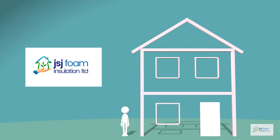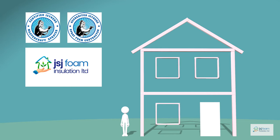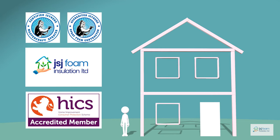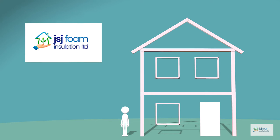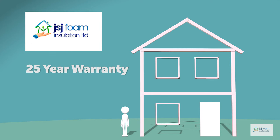JSJ Foam Insulation are an approved Isene installer and an accredited member of HIES Consumer Protection for the home improvement industry. We offer a 25-year warranty on our products and a 2-year guarantee on our install.